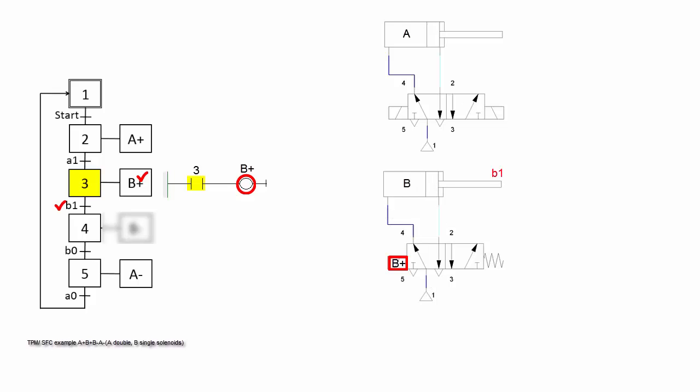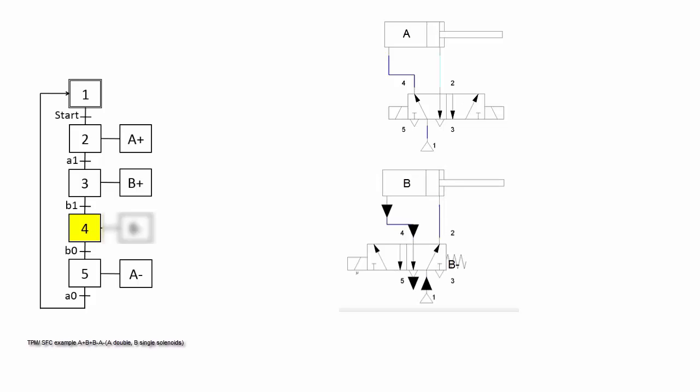When b1 is activated, step 3 is off and step 4 is on. At step 4, no action is activated, but cylinder B retracts — B minus is done by the spring.